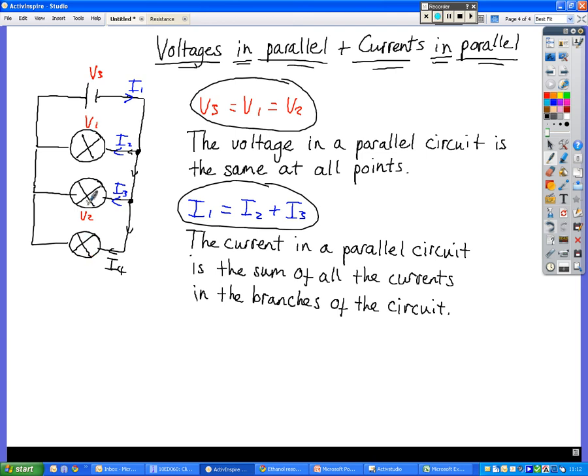It also means that they all receive the same brightness because they have the same voltage. So voltage is the same at all points, current gets split up across the components.